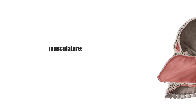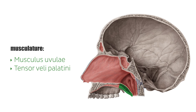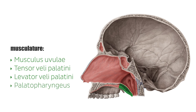The musculature is comprised of five main structures, including the musculus uvuli, the tensor veli palatinae, the levator veli palatinae, the palatopharyngeus muscle, and the palatoglossus muscle.